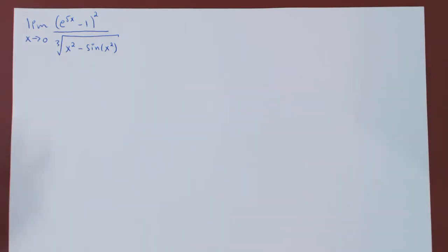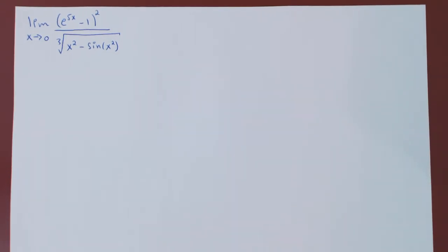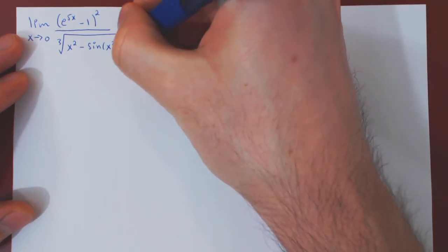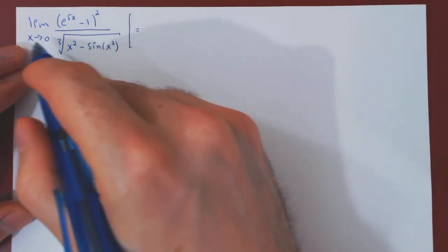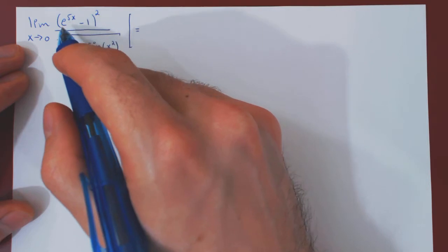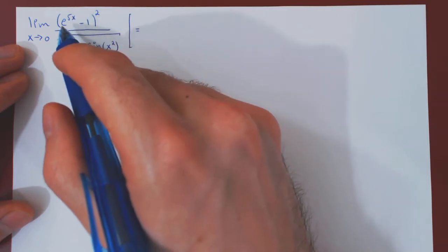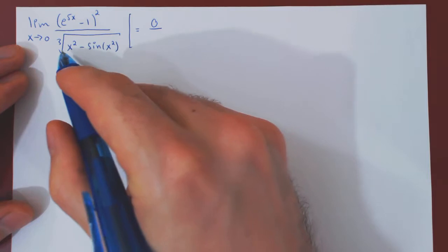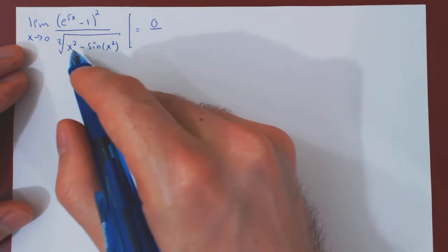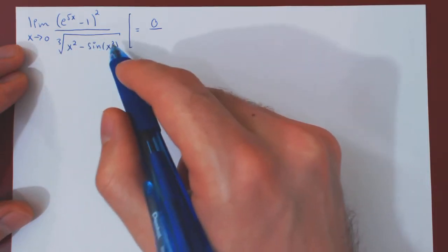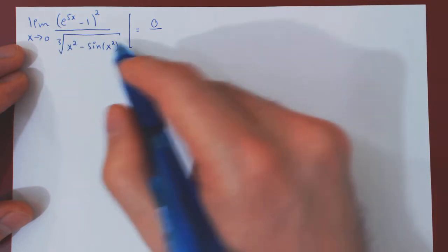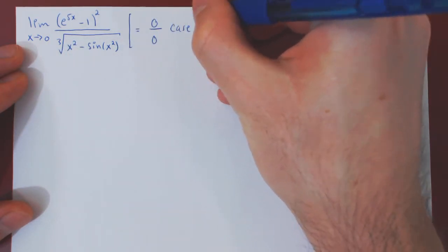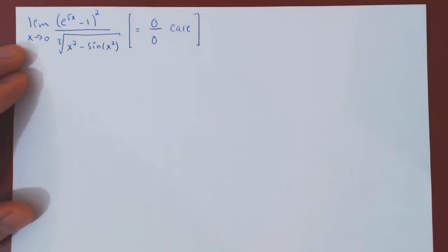As always when considering a limit, we want to look at what kind of case we're dealing with. As x goes to 0, 5x goes to 0, e to the 0 is 1, minus 1 is 0, squared is 0. In the denominator, x squared goes to 0, sine of 0 is 0, and the cube root of 0 is 0. So we do have a 0 over 0 case.